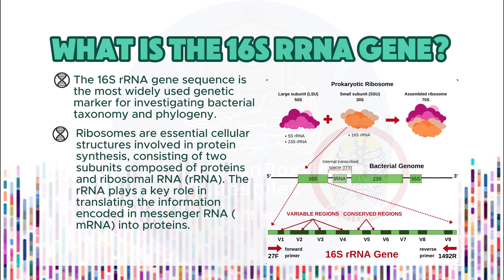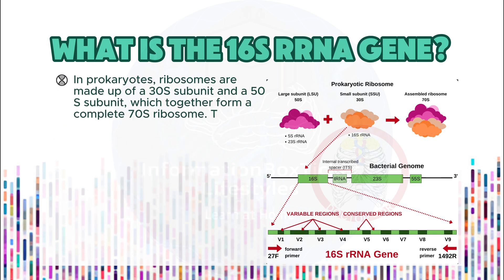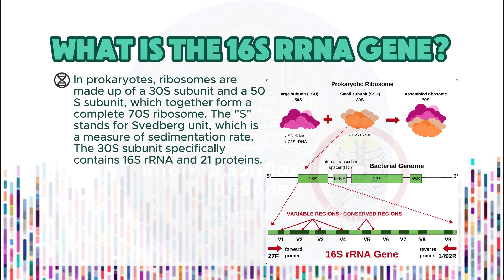The rRNA plays a key role in translating the information encoded in messenger RNA (mRNA) into proteins. In prokaryotes, ribosomes are made up of a 30S subunit and a 50S subunit, which together form a complete 70S ribosome. The S stands for Svedberg unit, which is a measure of sedimentation rate.